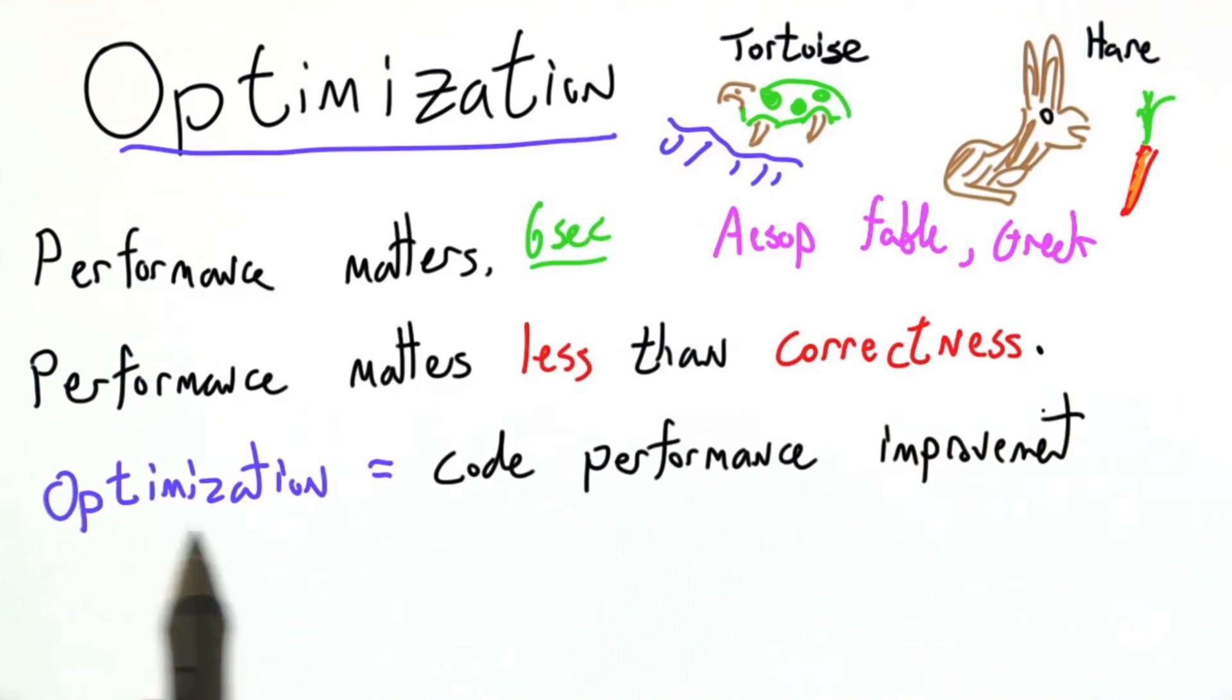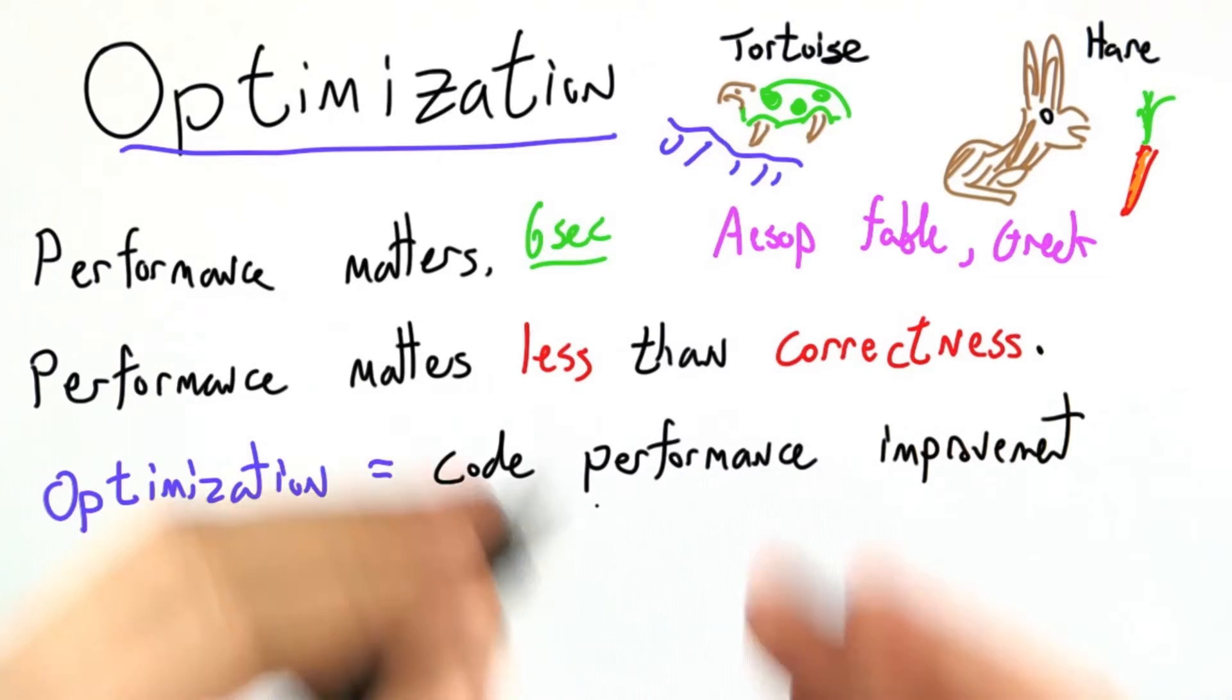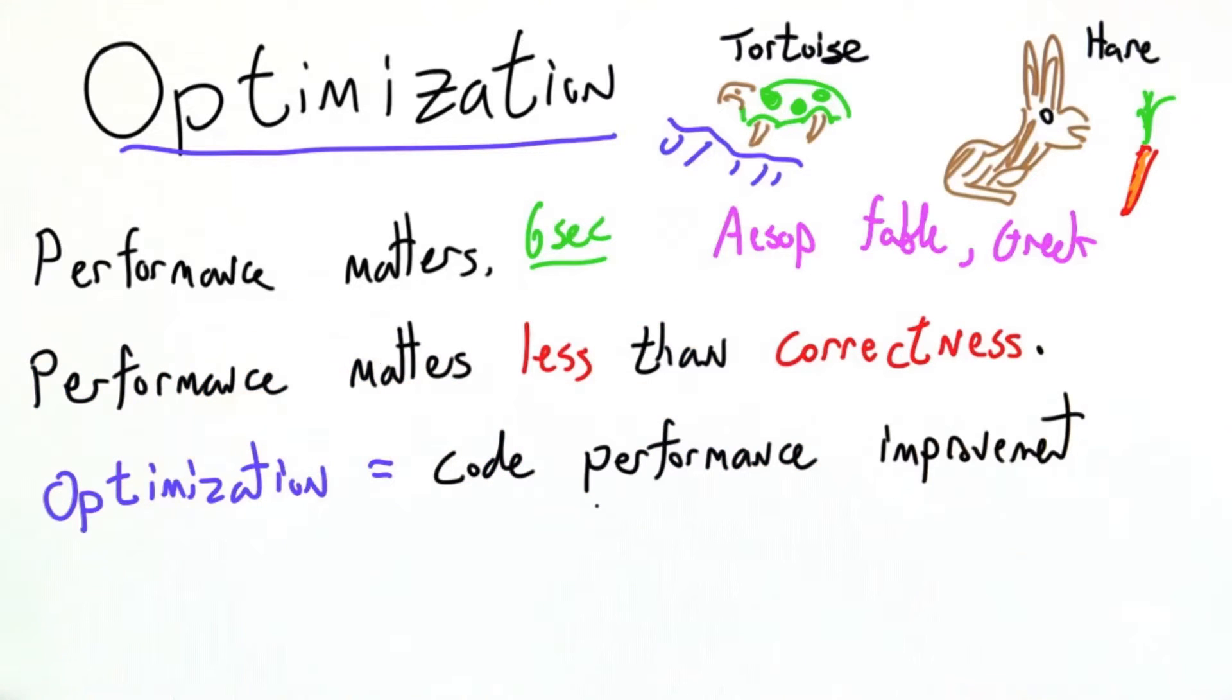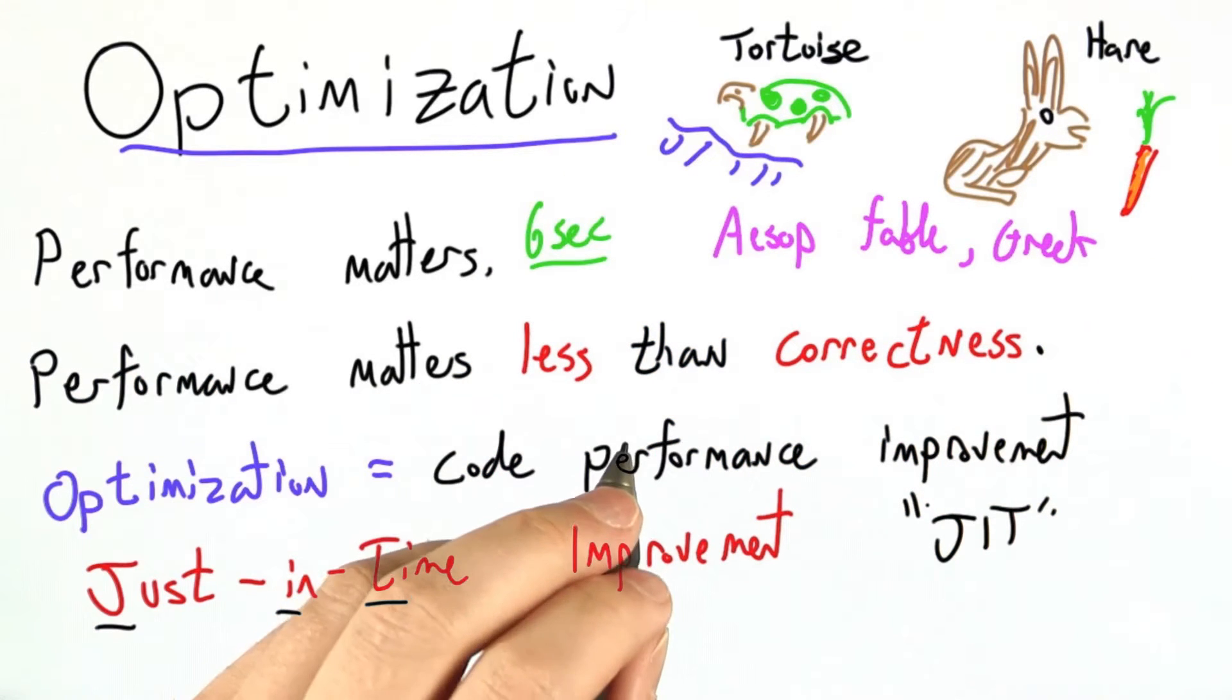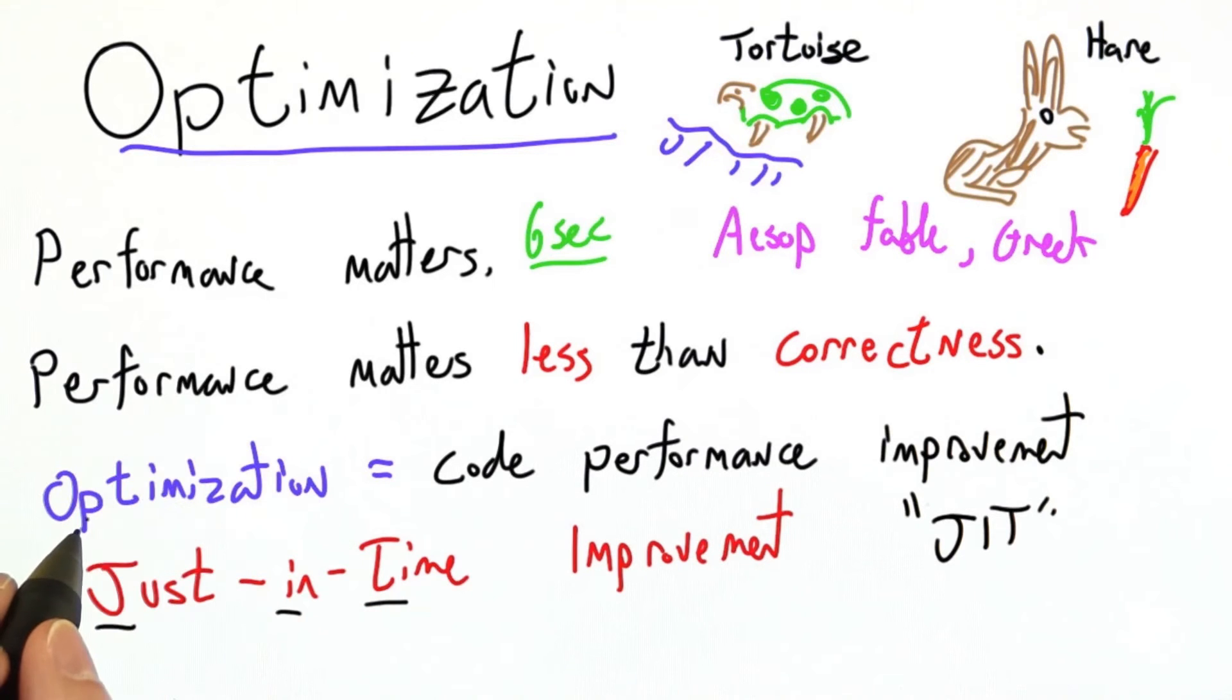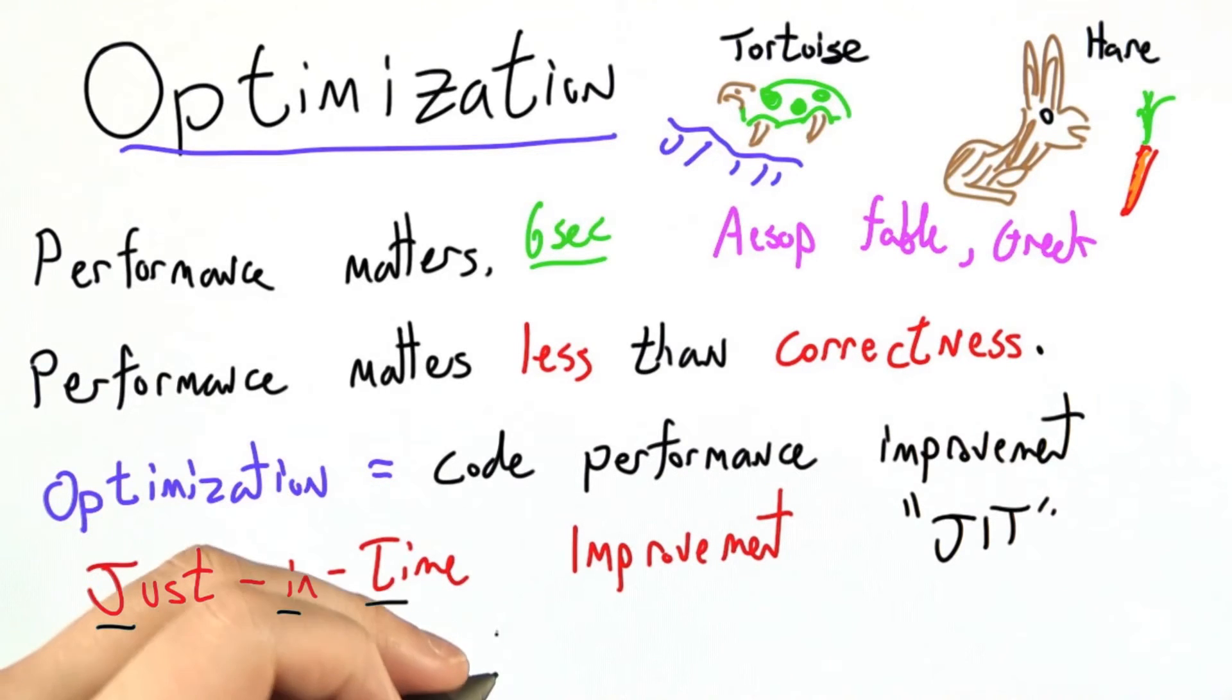In this sense, optimization refers to improving the performance of our code. Can we make our web browser take less time to render the same web pages? A lot of modern interpreters, from JavaScript interpreters to Python, use a technique known as just-in-time improvement, which is sometimes abbreviated as JIT, to fix up or improve code right before they run it, so that it's faster, but gets the same output.